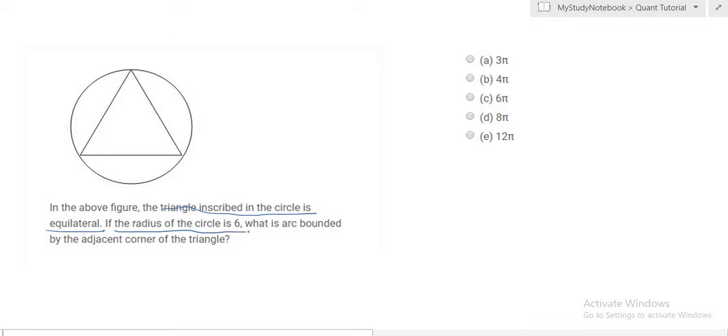The radius of the circle is 6. What is the arc bounded by the adjacent corner of the triangle? What we ultimately have to find is the arc bounded by adjacent sides, suppose the arc between these two points.